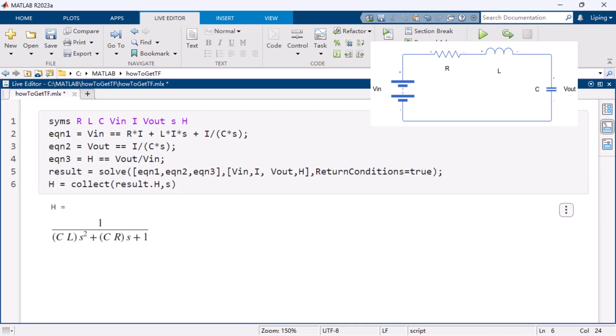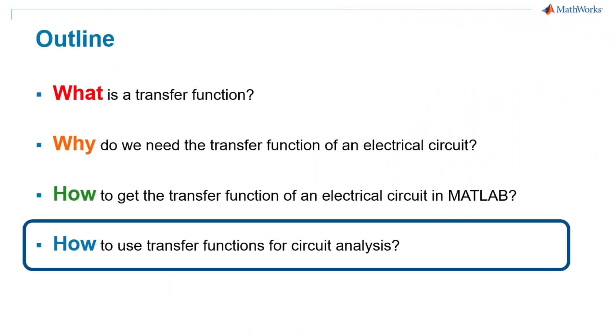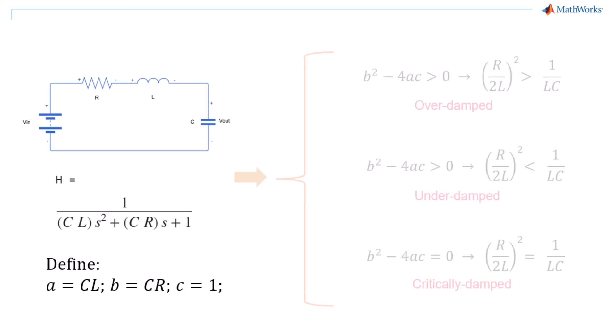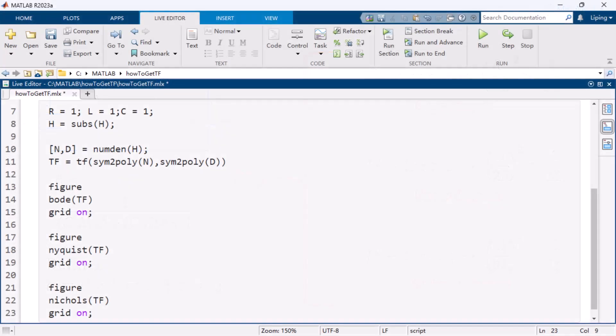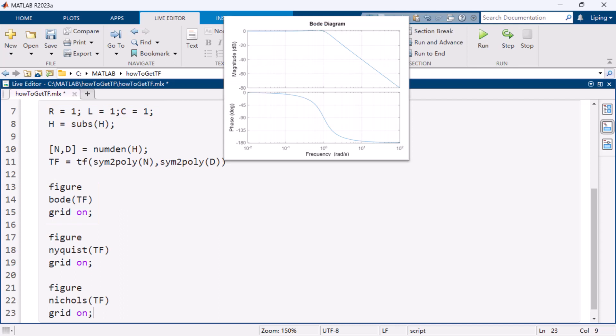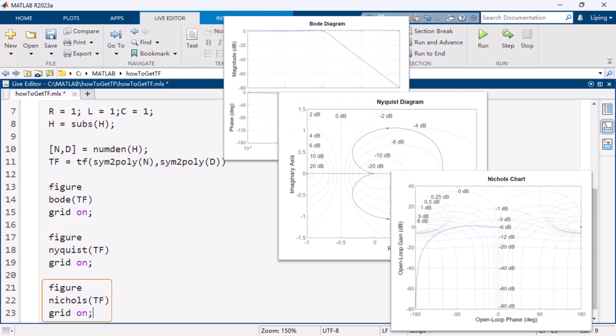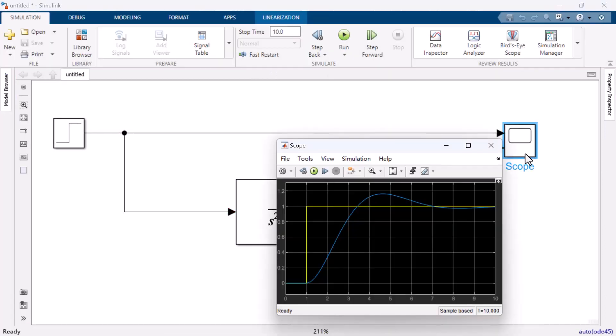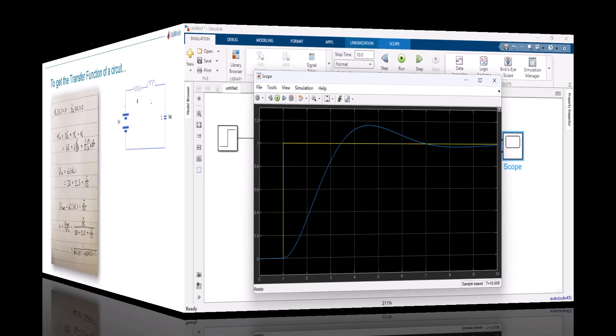After getting the expression of the transfer function, you may ask how to use it for circuit analysis. In this demo, you can use the transfer function to derive the conditions when the RLC circuit is overdamped, underdamped, or critically damped. You can also visualize the frequency response of the circuit under given values of the components with a Bode plot, a Nyquist plot, or a Nichols chart. Or model and simulate the dynamic behavior of the circuit in a large system in Simulink.